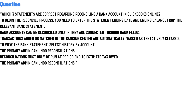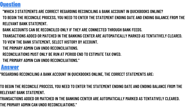Transactions added or matched in the Banking Center are automatically marked as tentatively cleared. To view the bank statement, select history by account. The primary admin can undo reconciliations. Reconciliations must only be run at period statement dates.